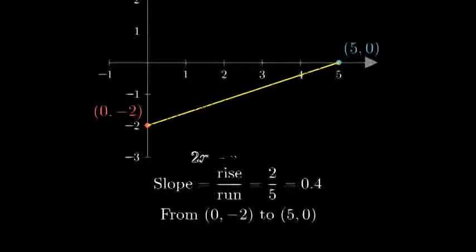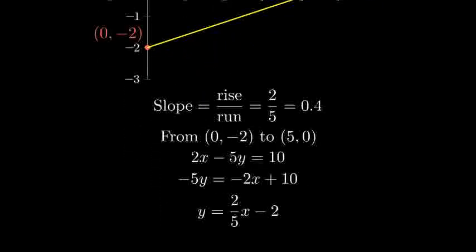We can verify this matches our original equation by rearranging 2x minus 5y equals 10 into slope-intercept form. The slope matches.